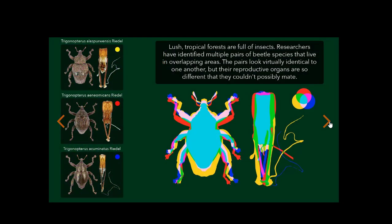Lush tropical forests are full of insects. Researchers have identified multiple pairs of beetle species that live in overlapping areas. The pairs look virtually identical to one another, but their reproductive organs are so different that they couldn't possibly mate.